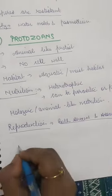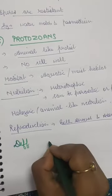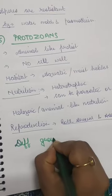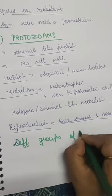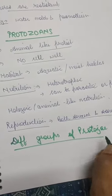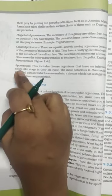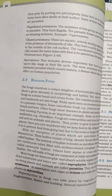Protozoans are divided into four groups as given in the NCERT book: amoeboid protozoans, flagellated protozoans, ciliated protozoans, and sporozoans. We will study each one by one. First, amoeboid protozoans.